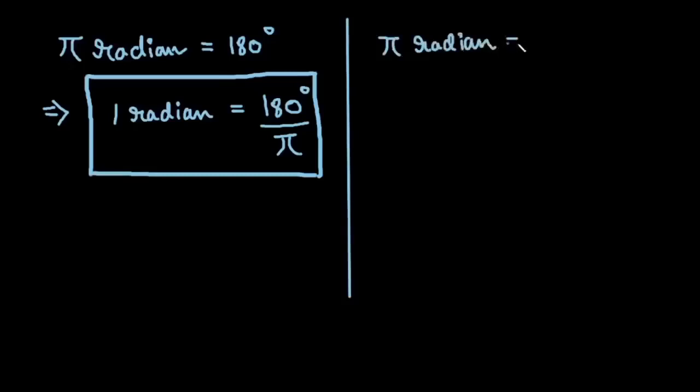We can get another corollary from it: π radians equals 180 degrees. We can divide both sides by 180, which will give us that 1 degree equals π over 180 radians.